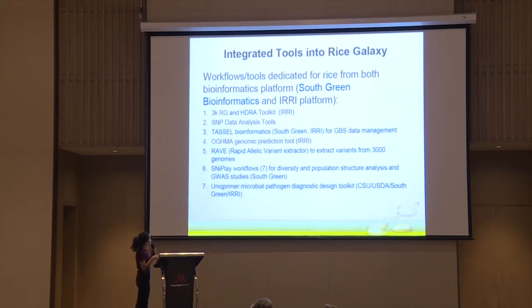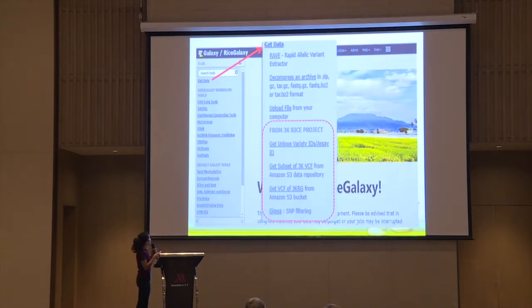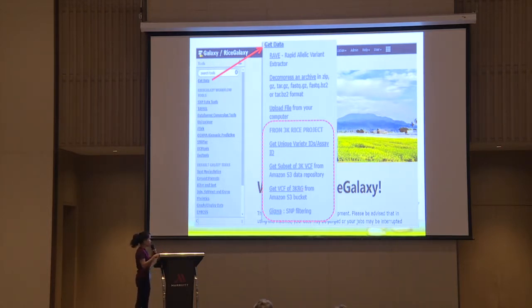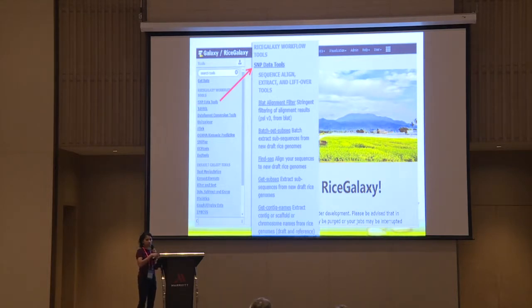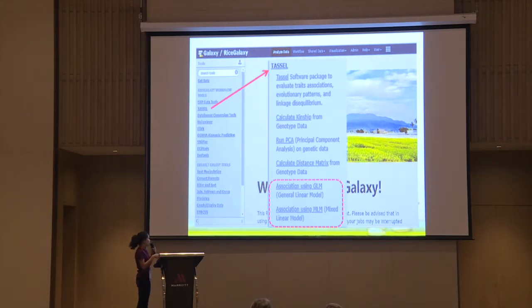These are the tools we have in Galaxy. We have the 3K RPG and Rice Genomes Hybrid Toolkit. We are using the Amazon S3 API to get a subset of BCF from the Amazon storage buckets. We also have the same data tools — most people use it for liftover, if they want to get SNPs from one reference and check if they have those SNPs in another reference. We also have TASL, which most researchers use for association analysis.